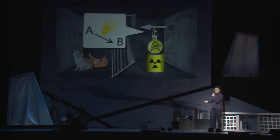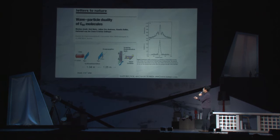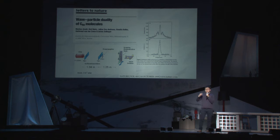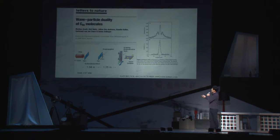이런 문제를 보고도 해결을 안 한다면 그건 물리학자가 아니겠죠? 물리학자는 이런 문제를 실험으로 해결합니다. 물론 고양이로 할 수는 없기 때문에, C60이라는 거대한 분자로 합니다. 탄소가 60개나 모여있는 시스템인데요. 저희한텐 고양이예요. 고양이만큼 큰 겁니다. 이걸 이중슬릿에다가 던져봤더니 간섭 무늬가 나왔어요.